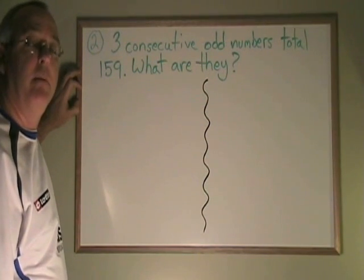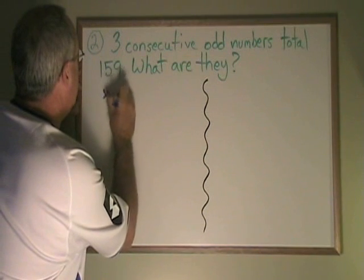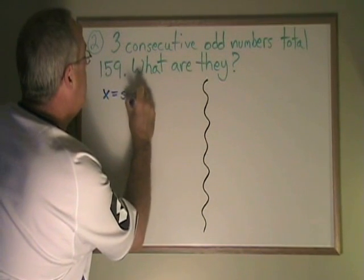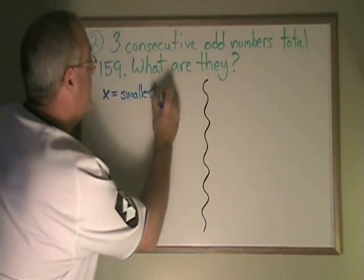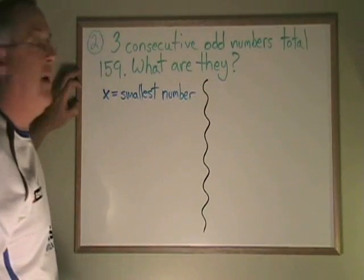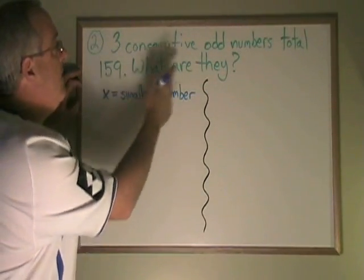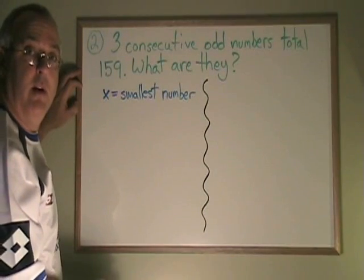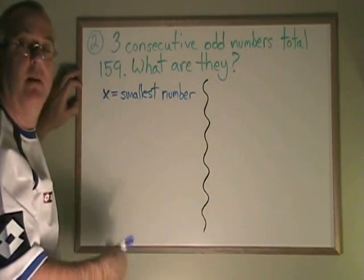Step 1, if you'll remember, is define the variables. I am going to make x equal to the smallest of the three numbers. When you have to define a variable to find more than one answer, a good idea is to always make x equal to the smallest of the answers.